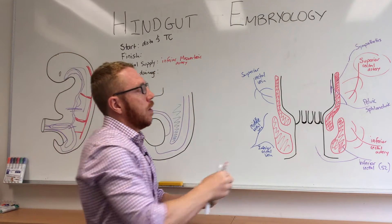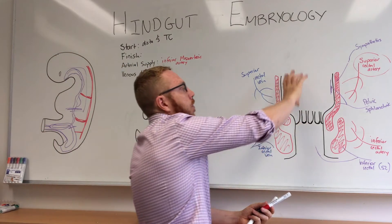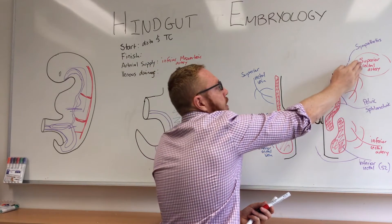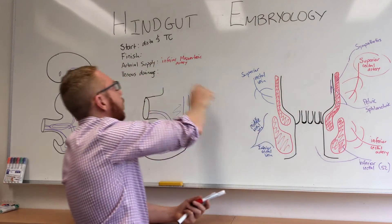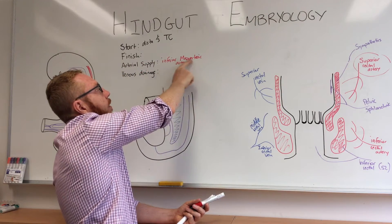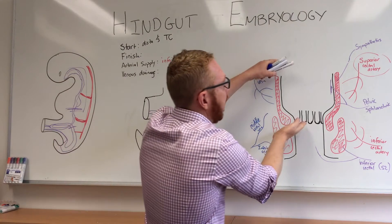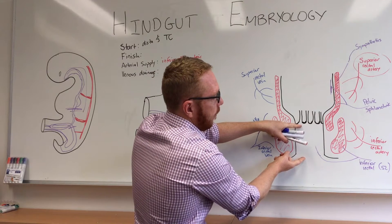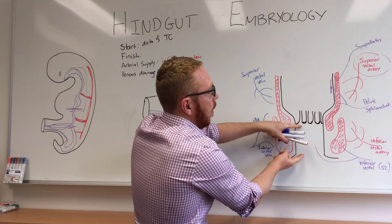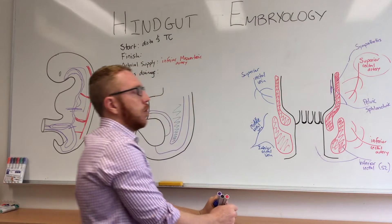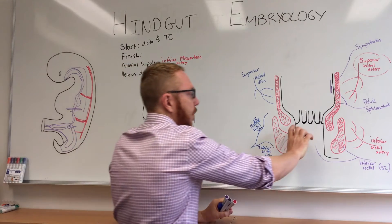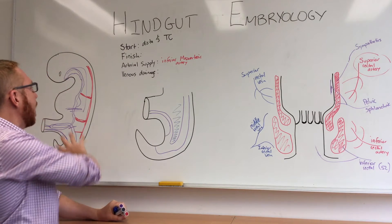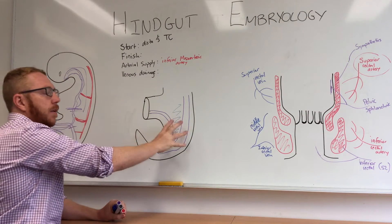To recap: the superior two-thirds (proximal two-thirds) of the anal canal is supplied by the superior rectal artery, which is a branch of the inferior mesenteric artery — confirming it is hindgut. That means the distal one-third (inferior one-third) of the anal canal is not hindgut; it is ectodermal. This distinction is important to note.